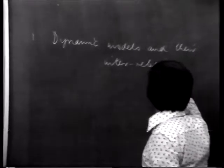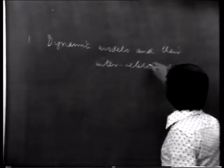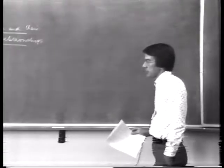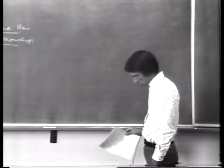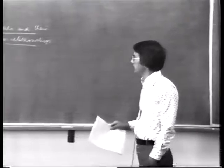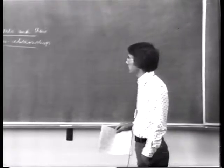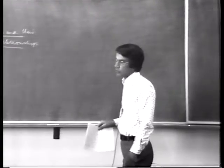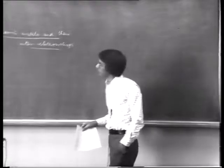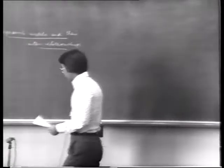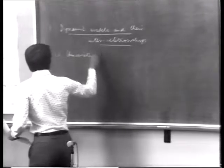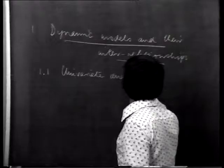Under the general heading of dynamic models and their interrelationships, I am interested in looking at the properties of time series models and the properties of econometric models, and at the end of the section basically relating one to another. The general idea is that there is a sense in which we can interpret a final equation or solution form of an econometric model as the time series model that a univariate analyst would in fact be fitting.